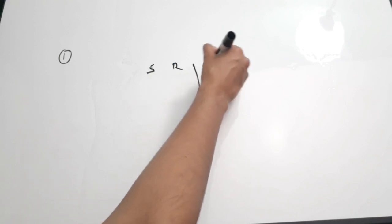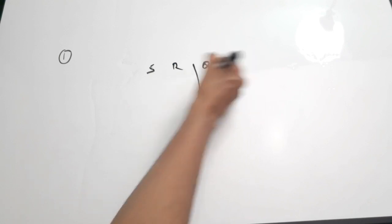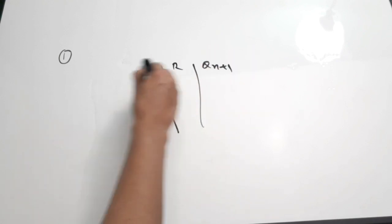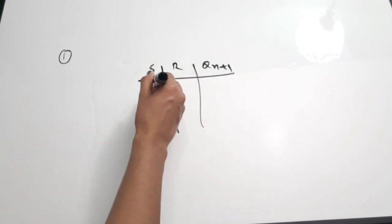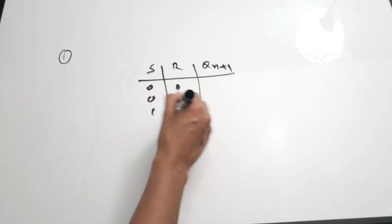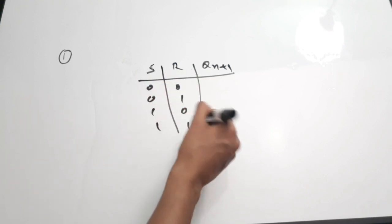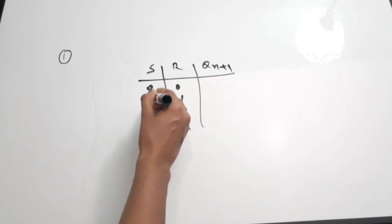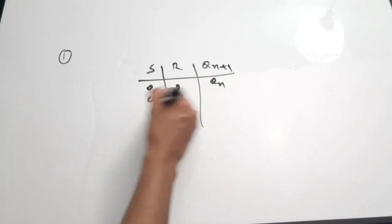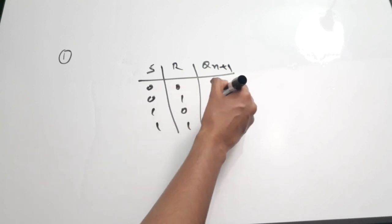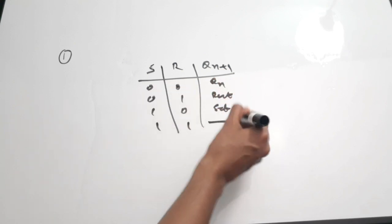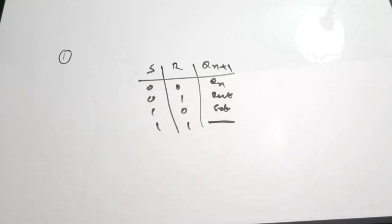The truth table has the Qn+1 state, along with S and R states. The combinations are: S=0, R=0 gives the previous state; S=0, R=1 is reset; S=1, R=0 is set; and S=1, R=1 is undefined.